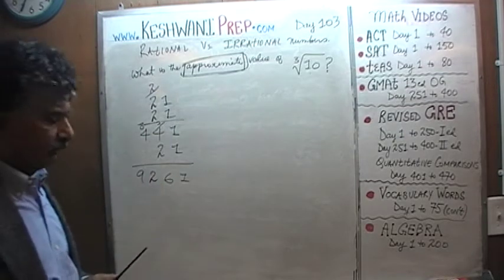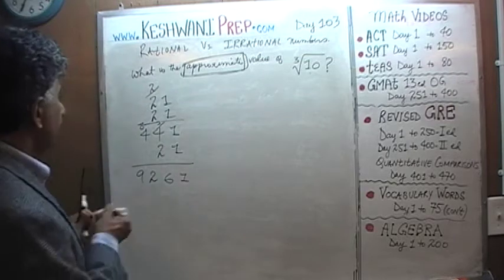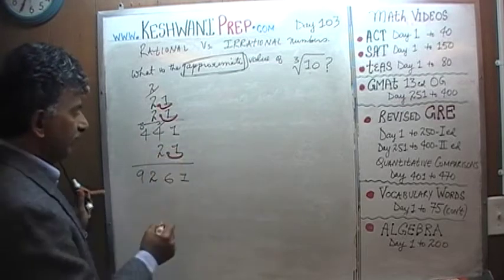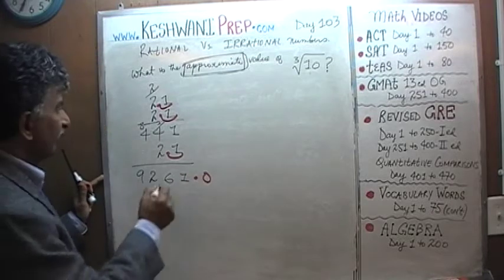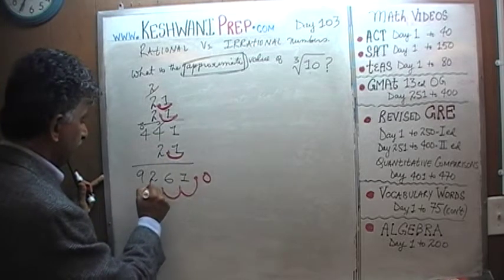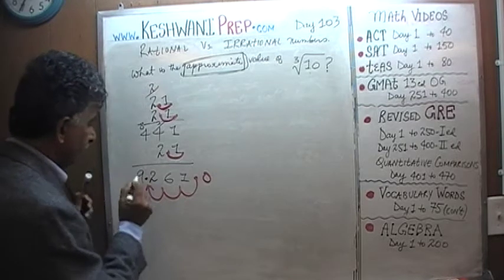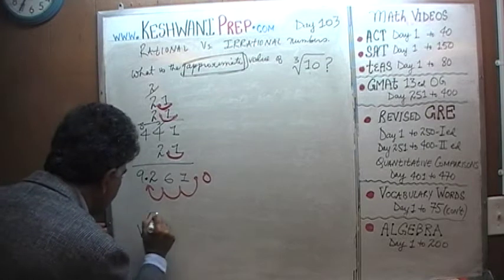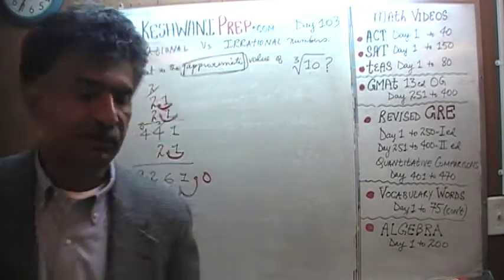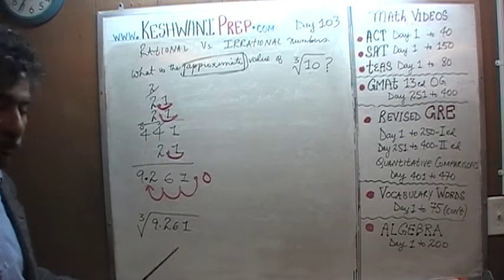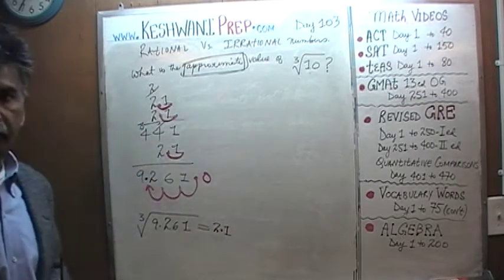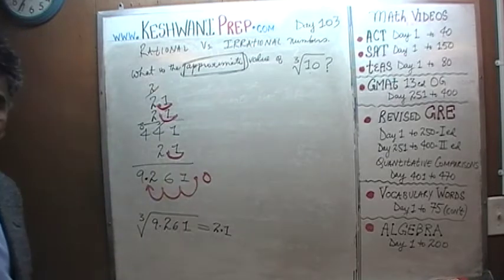Now we go back and take care of our decimal — let's do it in a different color. We have one decimal place in each of the three factors of 2.1, so we need to move the decimal three places. Moving the decimal three places in 9261 gives us 9.261. So the cube root of 9.261 is exactly 2.1. But that is not good enough — we want the cube root of 10. The value 9.261 is too far away; 2.1 is too small.